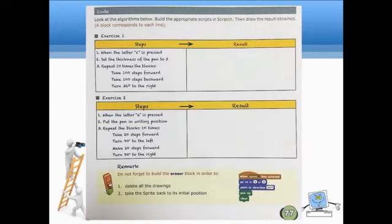Now, here's another exercises for us to make. So, for exercise 1, here are the steps. When the letter C is pressed, set the thickness of the pen to 5. Repeat 10 times the blocks. Under that, we have take 100 steps forward, take 100 steps backward, and turn 36 degrees to the right. So, a little later, we're going to do this exercise. Then, let's find out what will the result be.